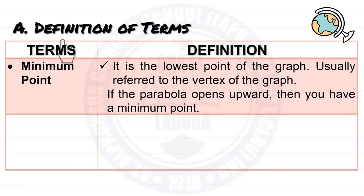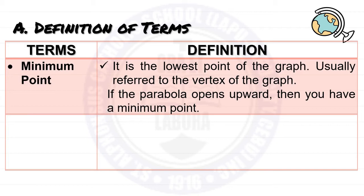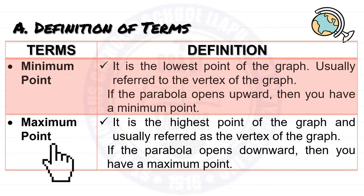The minimum point is the lowest point of the graph, usually referred to as the vertex. A minimum point only exists if the parabola opens upward. The maximum point is the highest point of the graph, also referred to as the vertex, and only exists if the parabola opens downward.